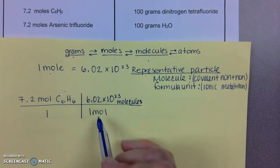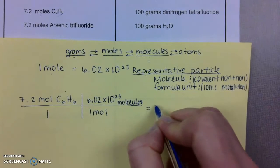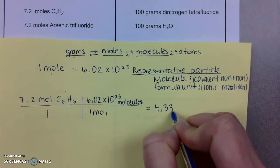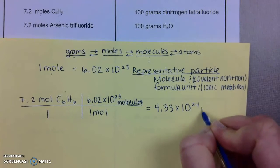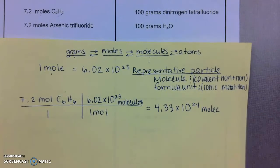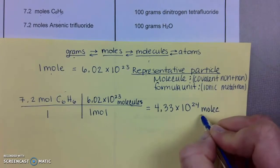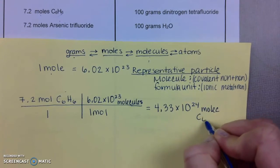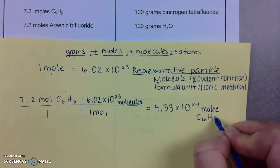Because these are next to each other, you multiply them, and then you divide by 1, and you get an answer of 4.33 times 10 to the 24th molecule, which can be shorthand as molec, of C6H6.